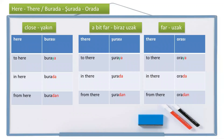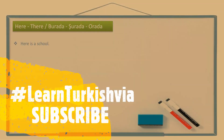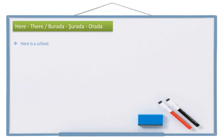Alright, now let's take a look at this chart. There are four situations. If the thing or person is close to me, I use burası, buraya, burada, buradan. If it's a bit far, I use şurası, şuraya, şurada, şuradan. If it's really far, I use orası, oraya, orada, oradan. Let's see some examples. Here is a school — this place is a school: burası bir okul.